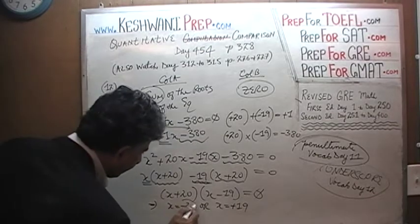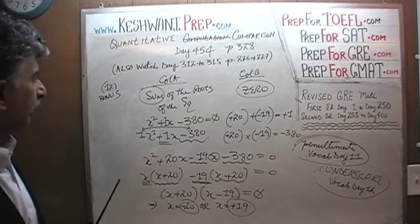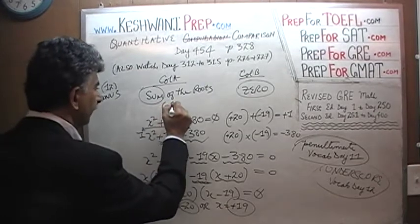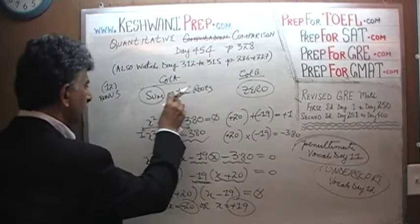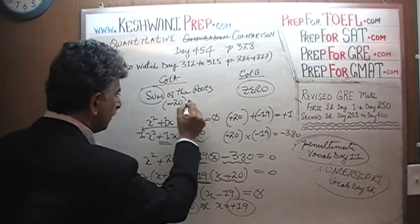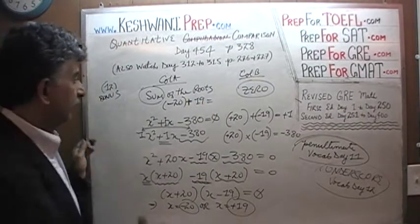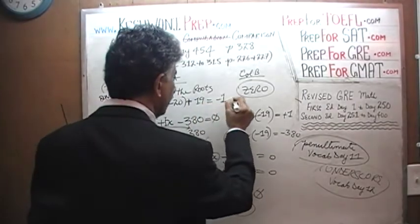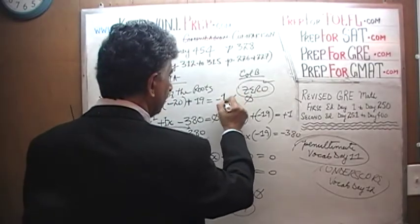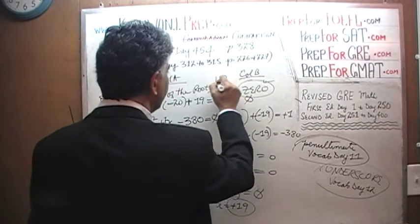This implies that either x equals negative 20 or x equals positive 19. The sum of the roots is negative 20 plus positive 19, which equals negative 1. Negative 1 is less than zero, which is what we have in column B. Therefore the answer to this question is B.